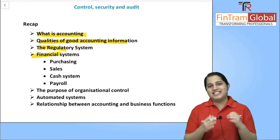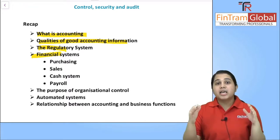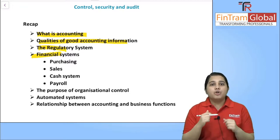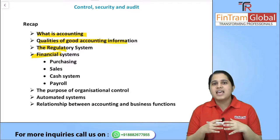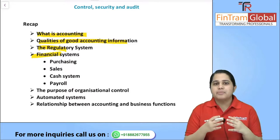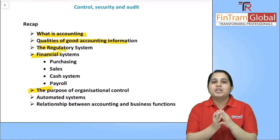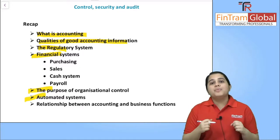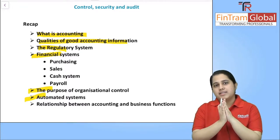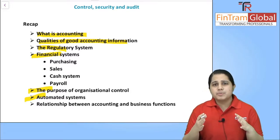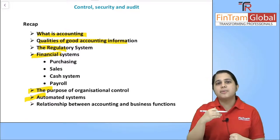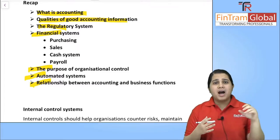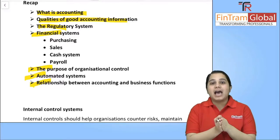Then we talked about various financial systems — purchasing system, sales system and their procedures. We also looked at controls in payroll and cash to prevent error or fraud. We discussed why organizations need controls in the first place — basically to avoid any error or fraud. We also covered automated systems, the difference between manual and automated systems, and how manual systems have slower processing and less efficiency. Finally, we talked about the relationship between accounting and various departments like marketing and production.